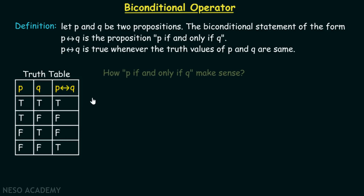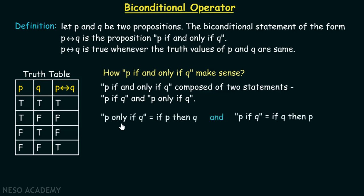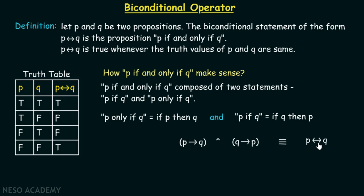How does P if and only if Q make sense? P if and only if Q is composed of two statements: P if Q, and P only if Q. P only if Q simply means if P then Q, and P if Q is equivalent to if Q then P. A biconditional statement is therefore the combination of if P then Q and if Q then P, which we can combine to represent the compound proposition P biconditional operator Q.